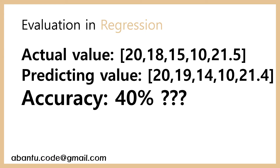Even though the predicted value is very similar to the actual value, but because it's not exactly that value, the classification method says it's a wrong answer. So we need another method in regression problems when we deal with accuracy.